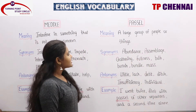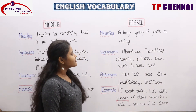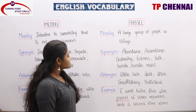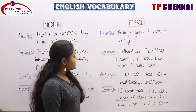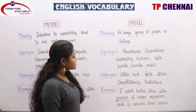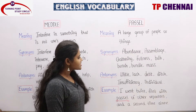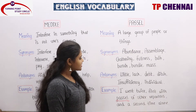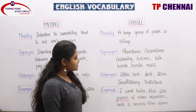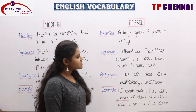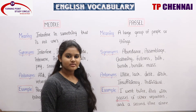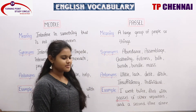Passel: a large group of people or things. Synonyms: abundance, assemblage, gathering, fullness, bulk, bunch, bundle, mass. All these words can be related to synonyms.